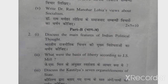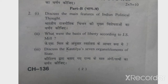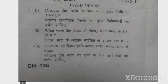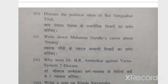These short questions are 2-2 marks each, totaling 10 marks. Now we have Part 2. Question number 2, which is Part 2: Discuss the main features of Indian political thought (Bharatiya Rajnitik Chintan ki mukhy vishishtaon ka varnan kijiye). Second: What were the bases of liberty according to J.S. Mill? Then: Discuss Kautilya's seven organ elements of the state.